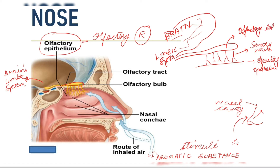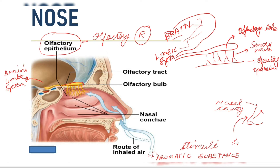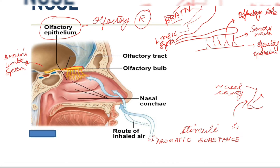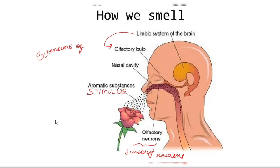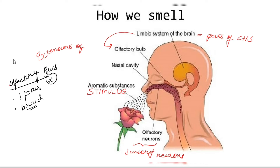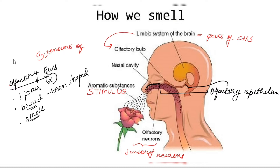The limbic system is made up of the inner part of the cerebral hemisphere and other structures like the amygdala and hippocampus, which control and regulate emotions, motivation, fear, rage, and so on. The olfactory epithelium, which has another name — the Schneiderian membrane — extends from the outside environment directly into the olfactory bulb.